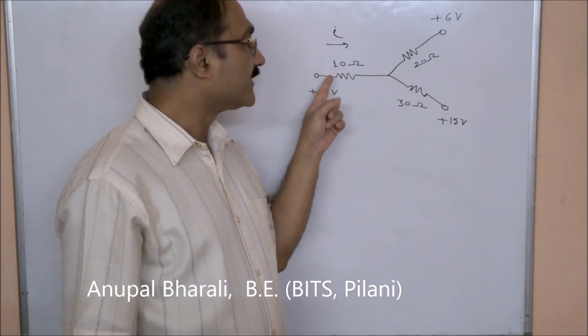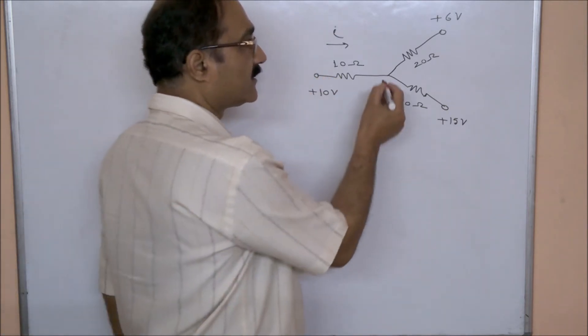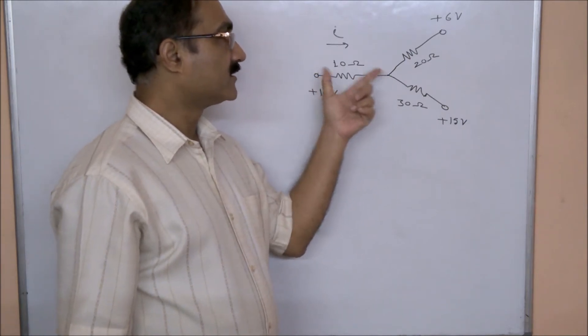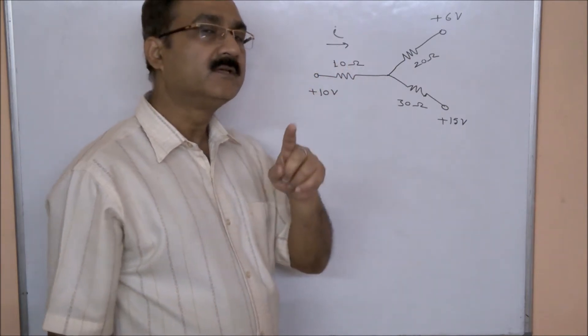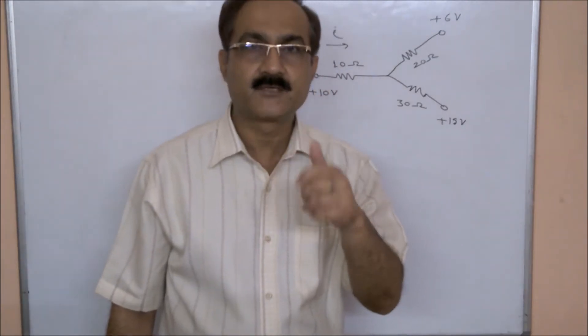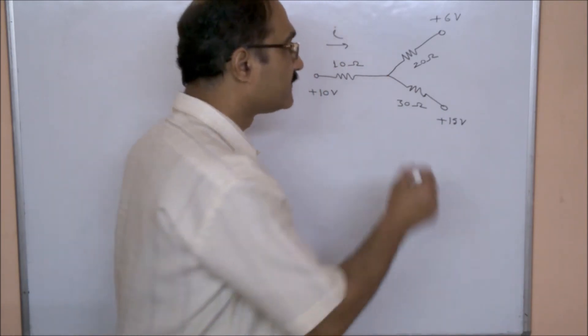So if I want to find the current through this, first if I can find the potential of this point, then the potential difference divided by 10 ohms will give me the current I. So the problem reduces to finding the potential of this point. Let's call it V.